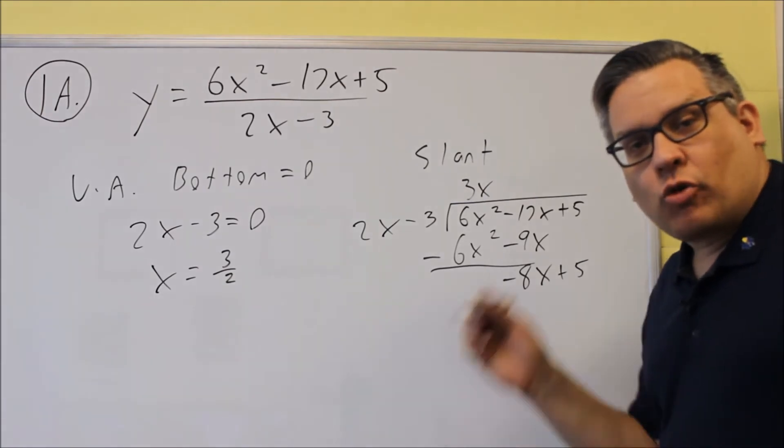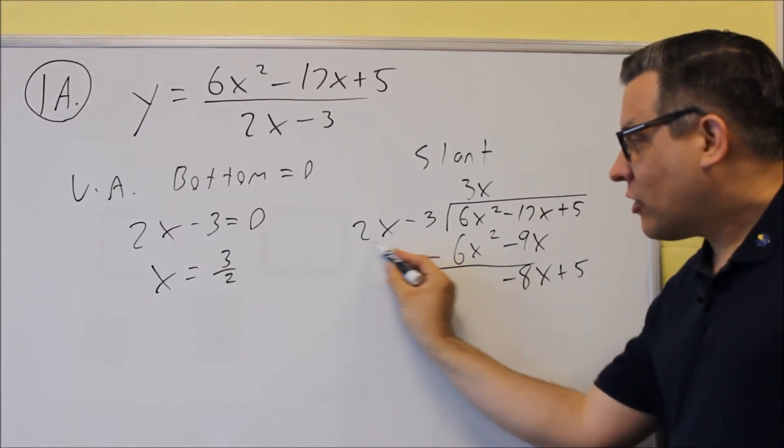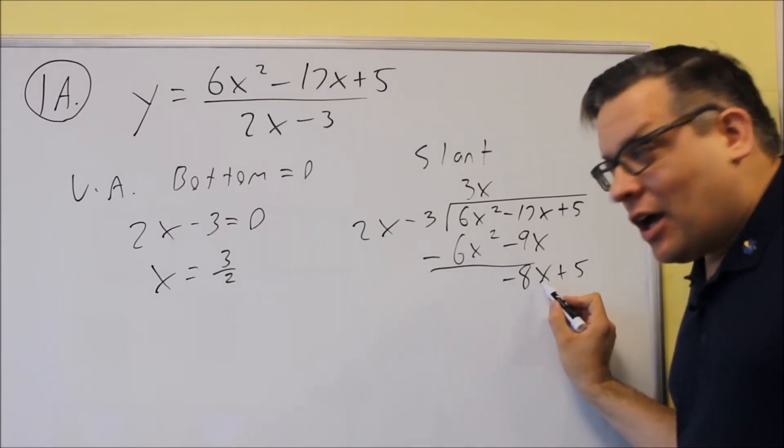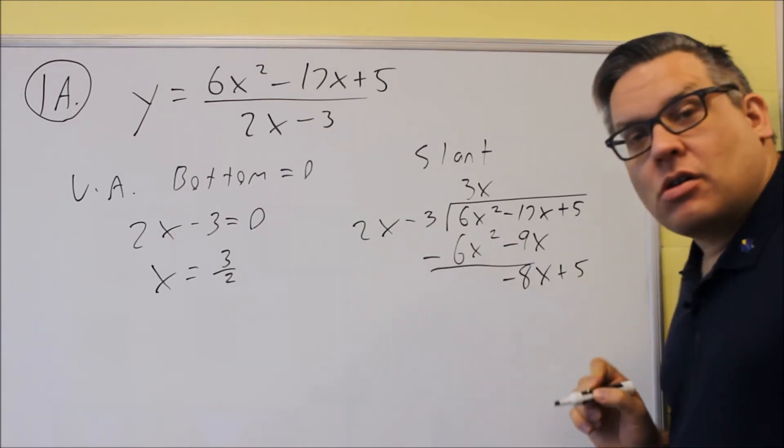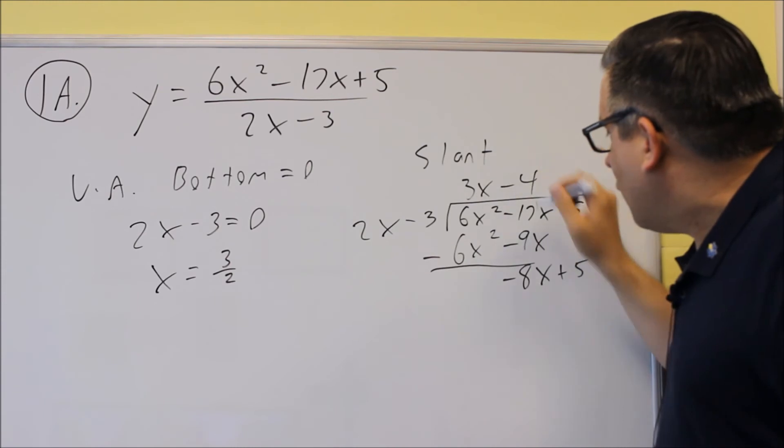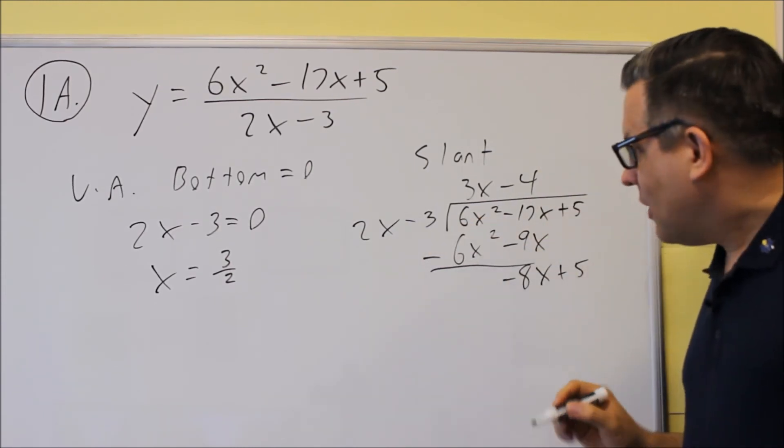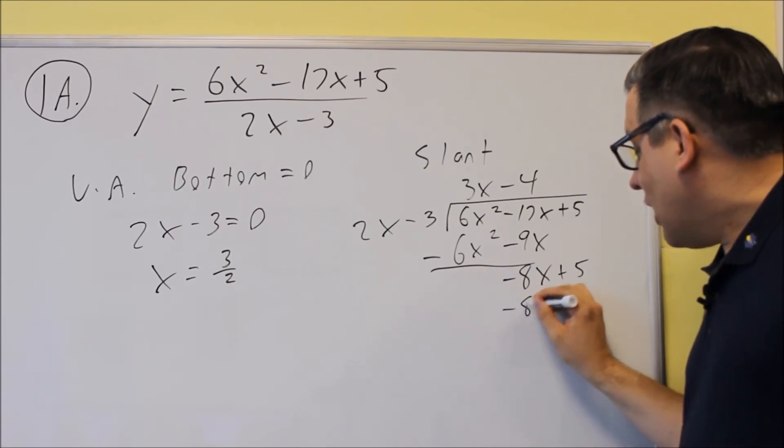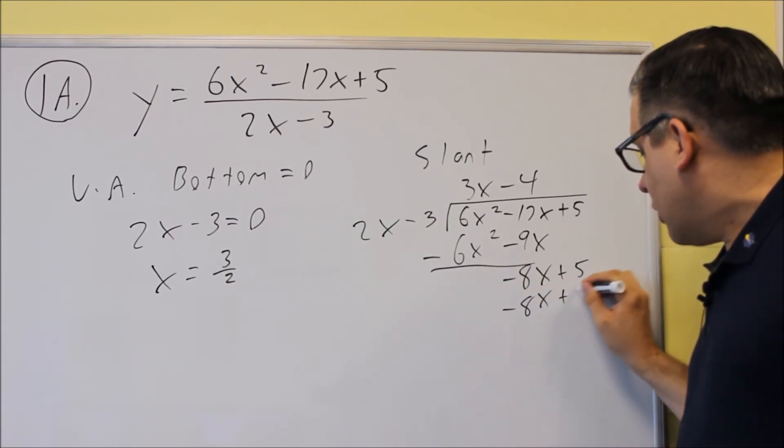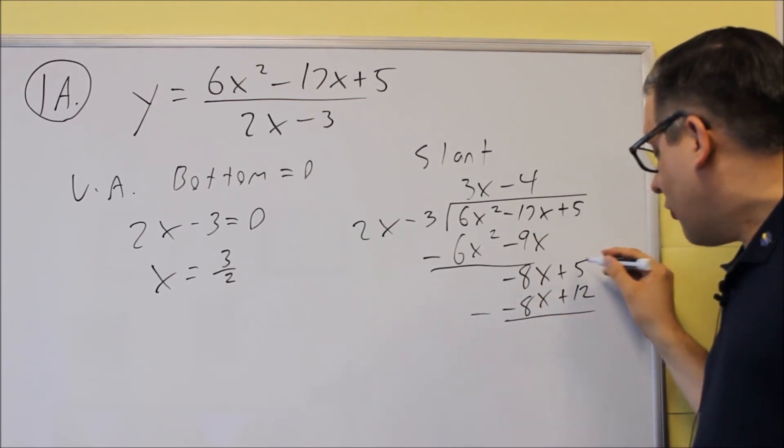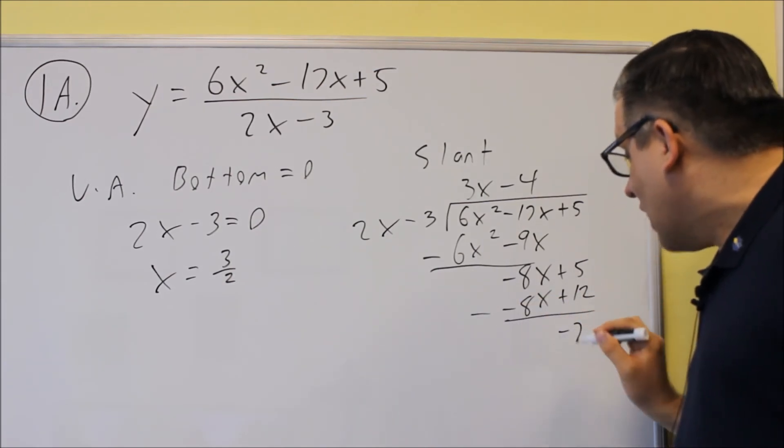We're going to repeat the process. Now we ask, what do I have to multiply the 2x by in order to get negative 8x? Well, we already have the x there, but you'll need a negative 4. So we're going to multiply negative 4 times both things on the outside, and we get negative 8x and then we get plus 12. And then when you subtract that, you get 5 minus 12, which is negative 7.